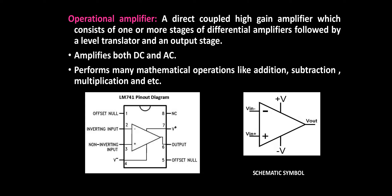Now let's see the next point: it amplifies both DC and AC. We know a normal amplifier amplifies only AC current. But the advantage of the operational amplifier is that it can amplify both DC as well as AC.